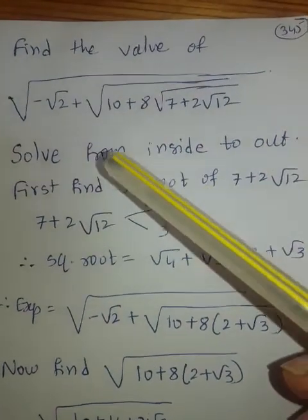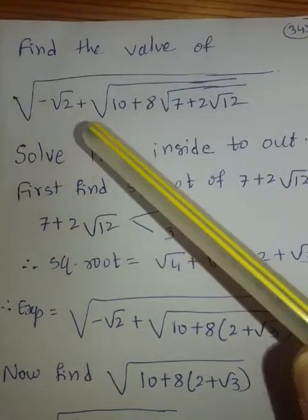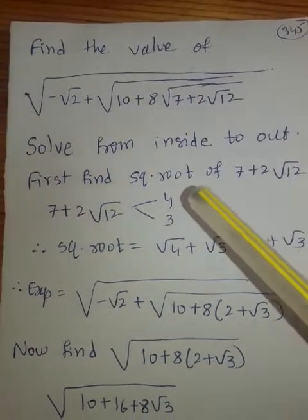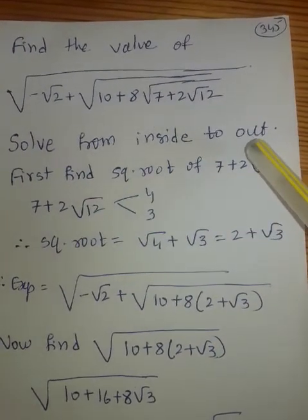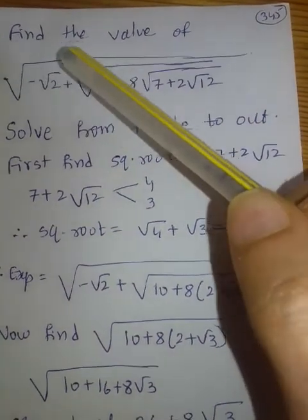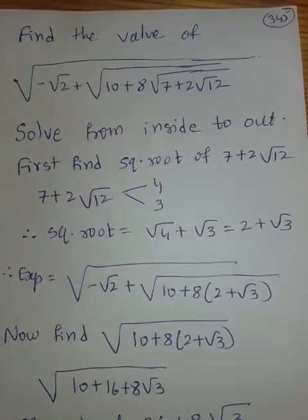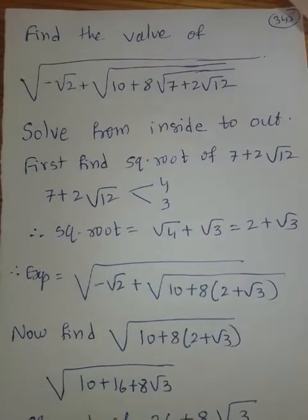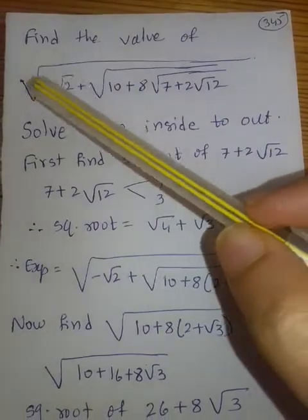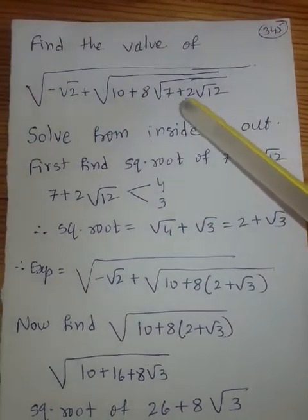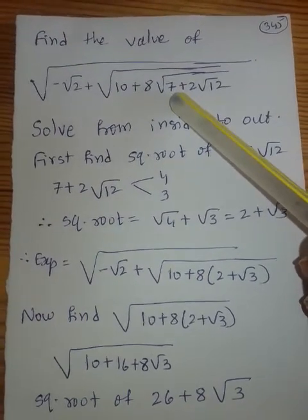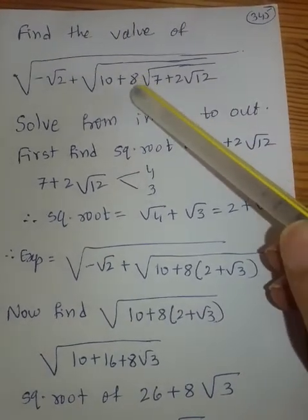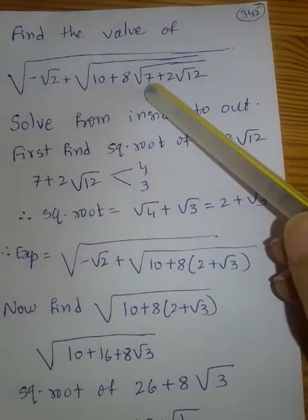Next example: find the value of a big expression with square root under square root under square root. Whenever there are nested square roots, what you need to do is solve from inside to out — similar to BODMAS-type problems. So first solve the innermost expression, √(7 + 2√12), then work outward.